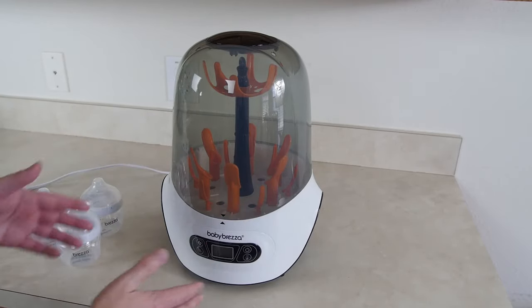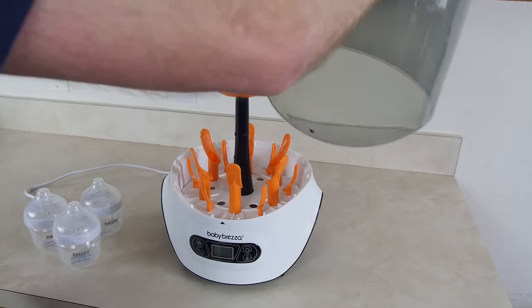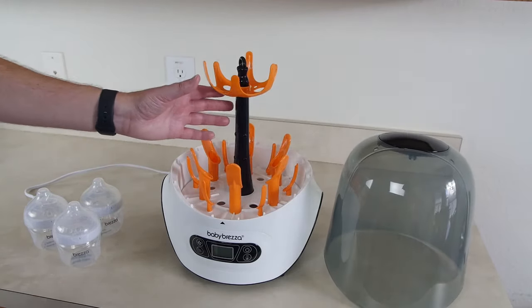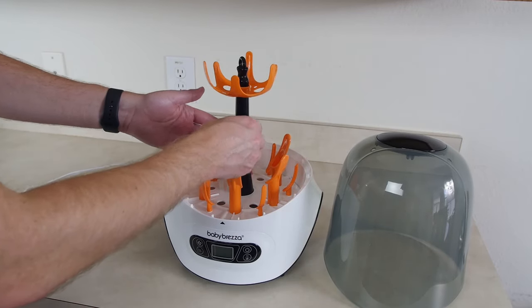Let's talk about the components of this Baby Brezza sterilizer dryer. The first top part is the lid which we can go ahead and take off. The second part right here is the accessory rack, this is the upper post, this whole thing is the accessory rack.